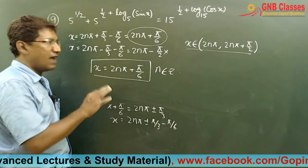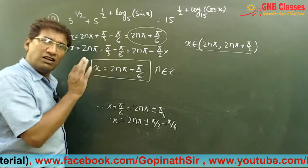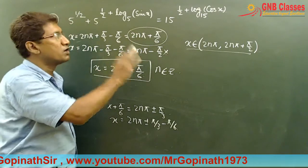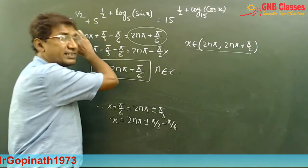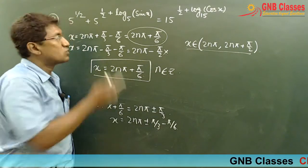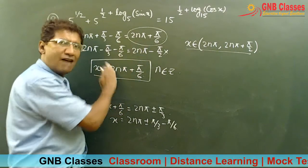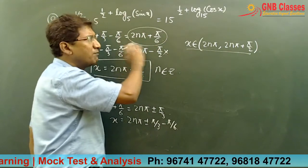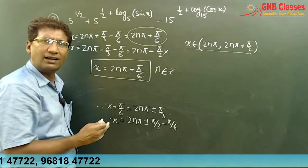What we have learned from this problem: whenever this kind of problem is given, first find out the values of x for which the equation is defined, because if the equation is not defined you cannot do the sum. Then solve it normally, find the values of x which fall in the valid region from the first part, choose those values, and reject the others to get the final answer.